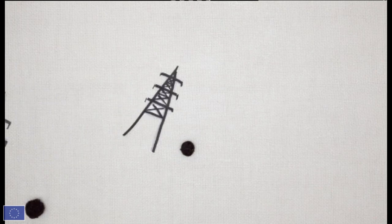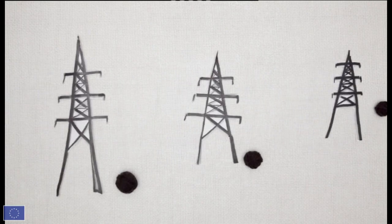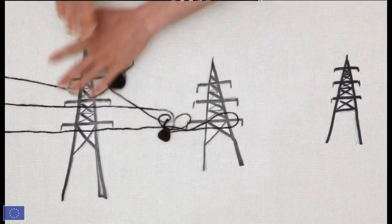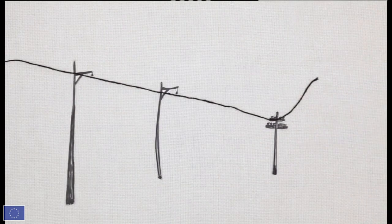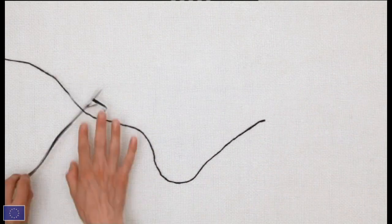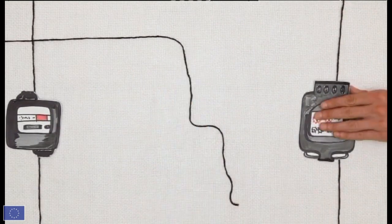Then the electricity travels long distances on a network of high-voltage lines. This is the transportation element. It's then distributed locally on a low-voltage network. This is the distribution component. When it reaches your meter, this is the supply part.